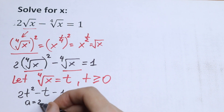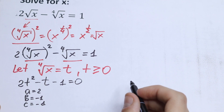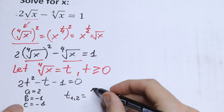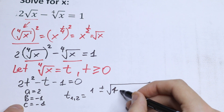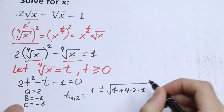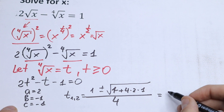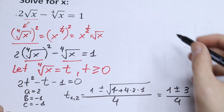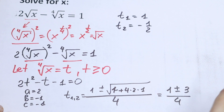We can solve this classic quadratic equation. Here a equals 2, b equals minus 1, and c equals minus 1. Using the quadratic formula, t₁ and t₂ equal minus b plus or minus the square root of b² minus 4ac, all over 2a. Calculating, we get 1 plus or minus 3, all over 4. So t₁ equals 1 and t₂ equals minus one-half.